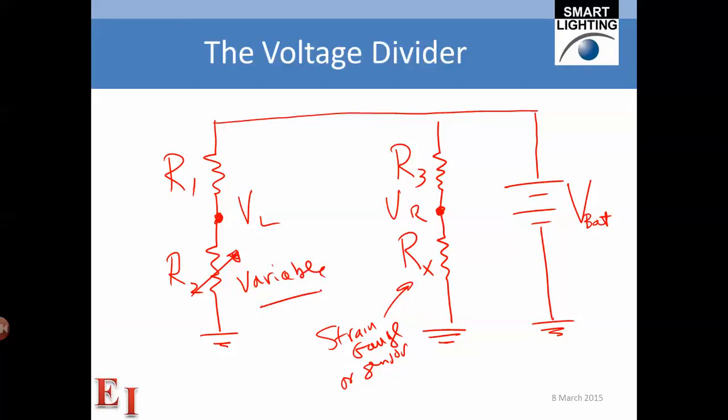So we are able to tweak that resistance until the two voltages are identical. And if we measure the voltage difference between the two, all we have to do is turn the knob on this variable resistor until the voltage difference goes to zero.